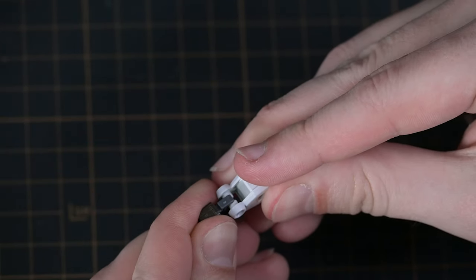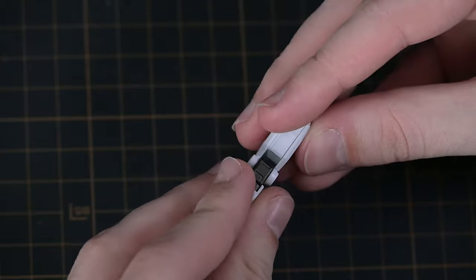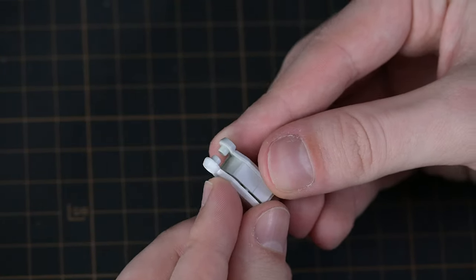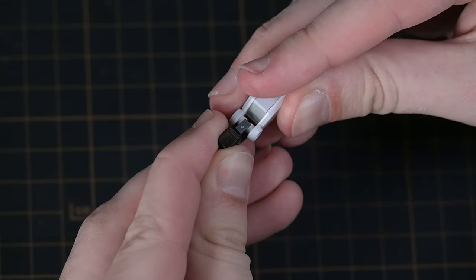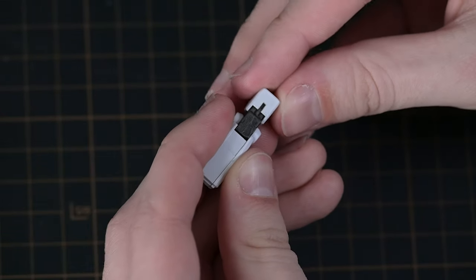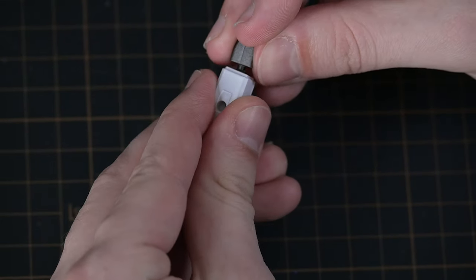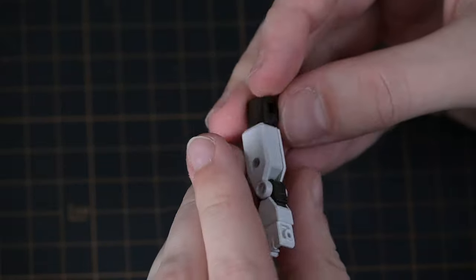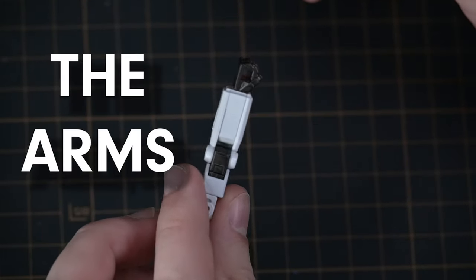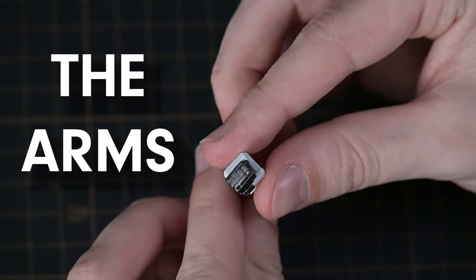Moving on now to the arms, these were pretty self-explanatory. They went together easily, they weren't as hard as the head or the chest area, but still there were some difficulties. I found that I didn't separate all the pieces correctly the first time, but it's the arms of an Entry Grade - they're pretty easy to put together.